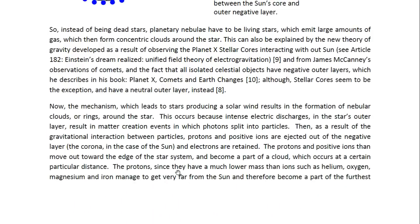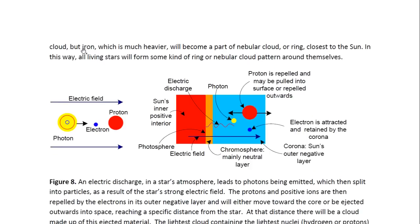The protons, since they have a much lower mass than ions such as helium, oxygen, magnesium and iron, manage to get very far from the sun and therefore become a part of the furthest cloud. But iron, which is much heavier, will become a part of a nebula cloud or ring closest to the sun. In this way, all living stars will form some kind of ring or nebula cloud pattern around themselves.